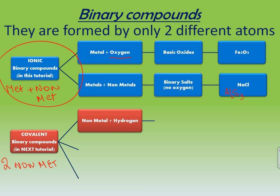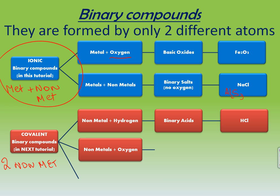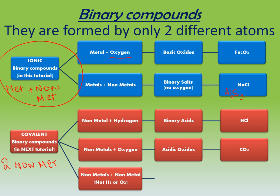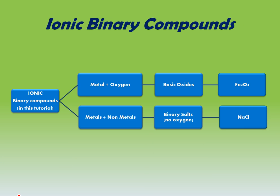About covalent binary compounds, we have non-metal plus hydrogen, which is going to give us the binary acids — we'll see that later. Non-metals plus oxygen will give us acidic oxides, because they form acids when combining with water. And non-metals with other non-metals that are not hydrogen and oxygen form different compounds with different names — for example, phosphorus pentachloride. Now we're going to begin with metal and oxygen and how to name basic oxides, then move to metals and non-metals in general to name the salts.